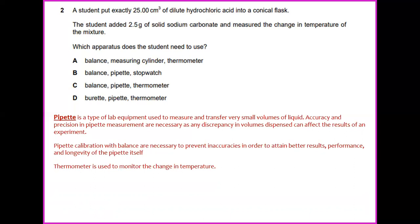Pipette calibrations with balance are necessary to prevent inaccuracy in order to obtain better result performance and longevity of the pipette itself. Another instrument used is a thermometer. It is used to monitor the change in temperature. So the answer for this number 2 would be C: balance, pipette and thermometer.